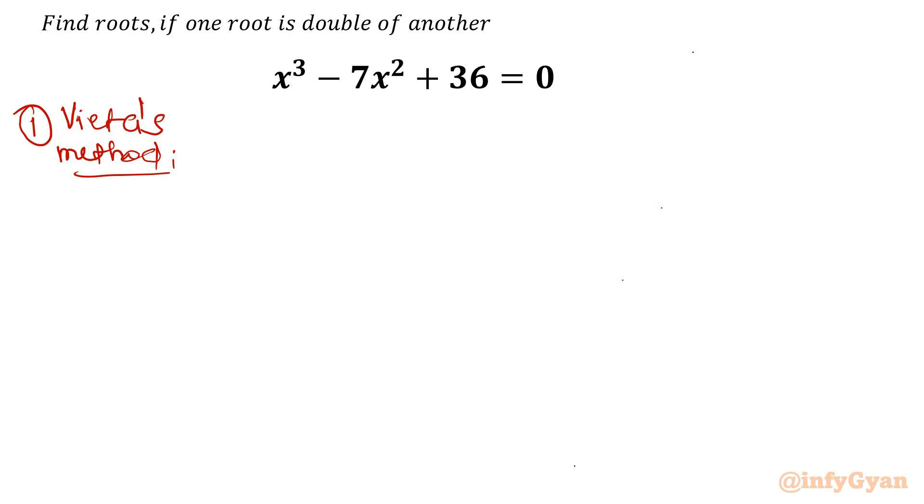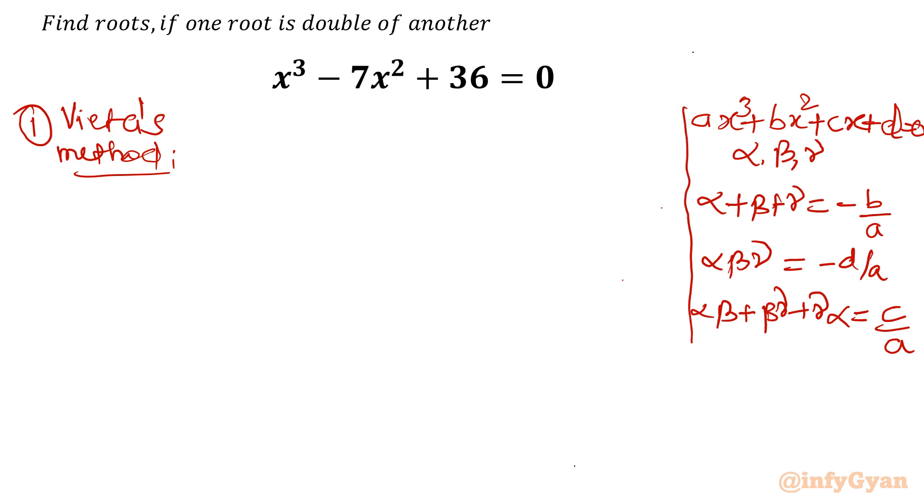If one cubic equation ax³ + bx² + cx + d = 0 is known and three roots α, β, γ are known, we can write: sum of roots = -b/a, product of roots = -d/a, and sum of roots two at a time (αβ + βγ + γα) = c/a. This is what we know from Vieta's method.